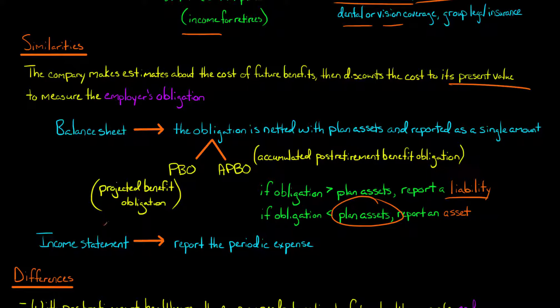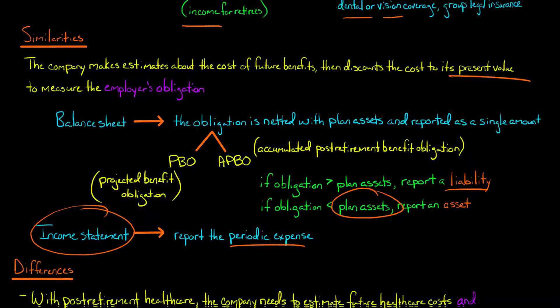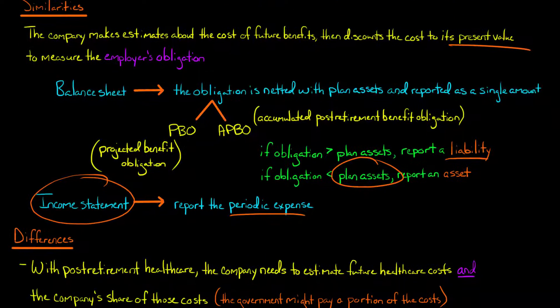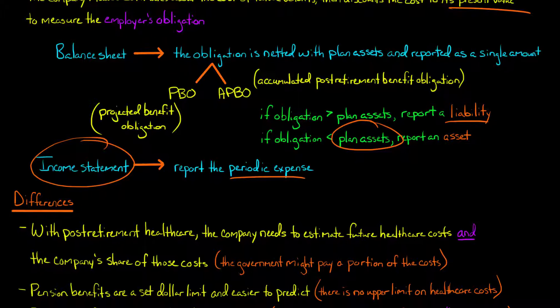Similarly, on the income statement, we're going to report the periodic expense. If it was a pension plan, we're talking about pension expense; if we're talking about other post-retirement benefit plans, we'd have post-retirement benefit expense. I've got other videos where I show you how to calculate or make the journal entries and so forth.